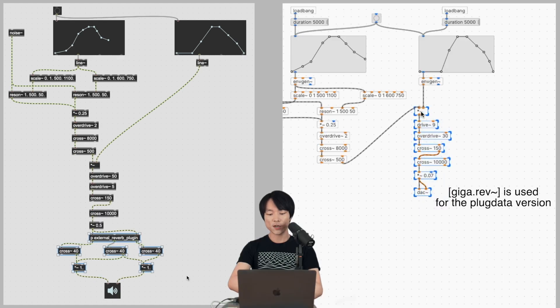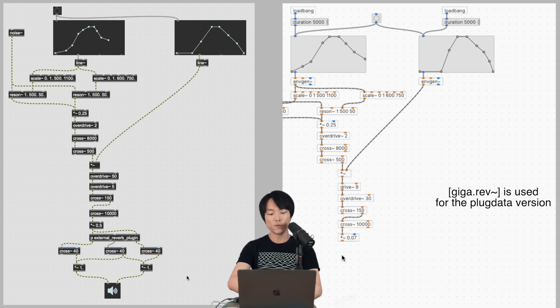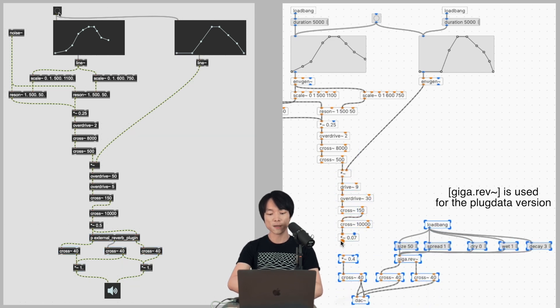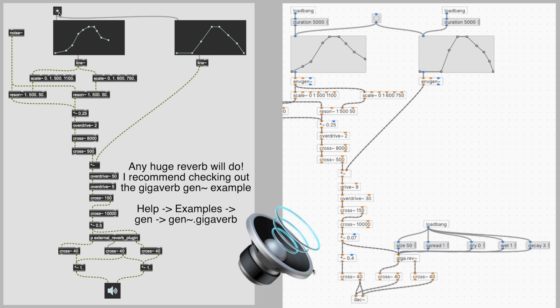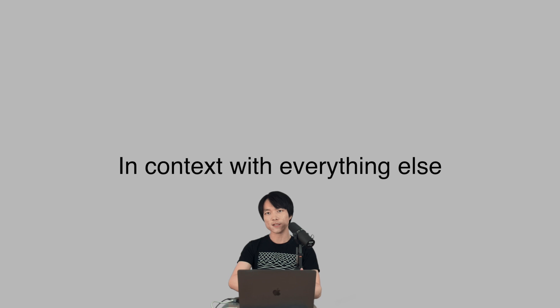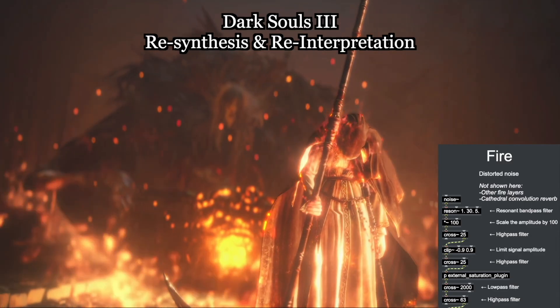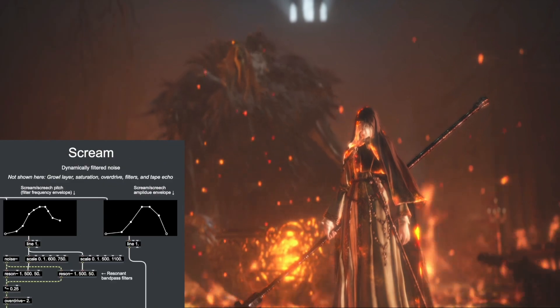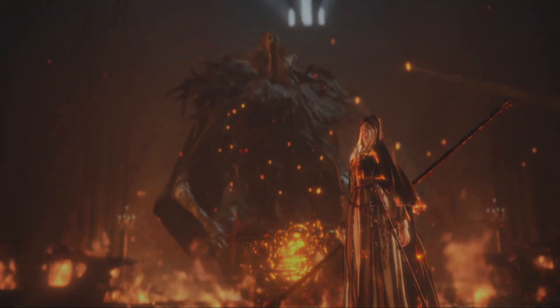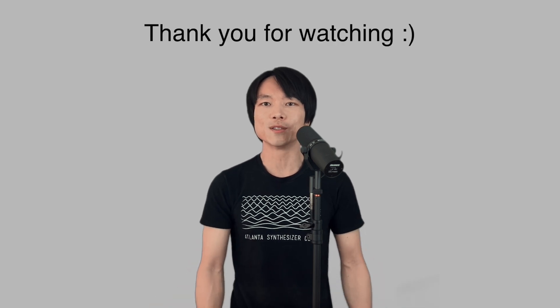Because this scream happens in a cathedral, I apply the convolution reverb with a cathedral impulse response. Any giant-sounding reverb should get the job done though. Finally, let's listen again with the fire background soundscape. I hope you have fun creating a scream sound from scratch. I'll see you in the next video. Take care.